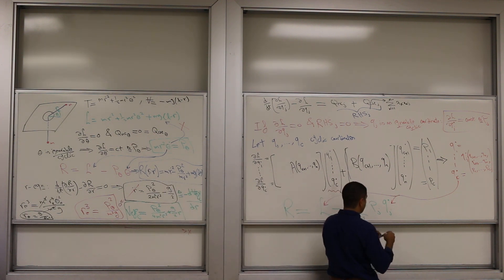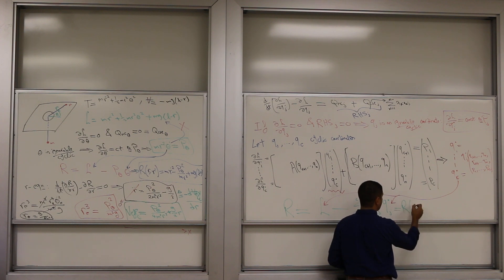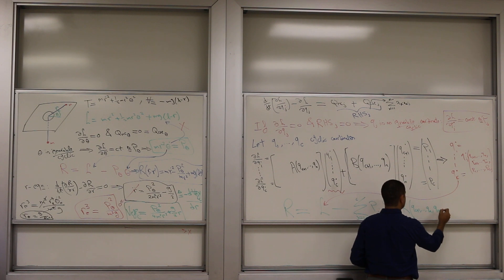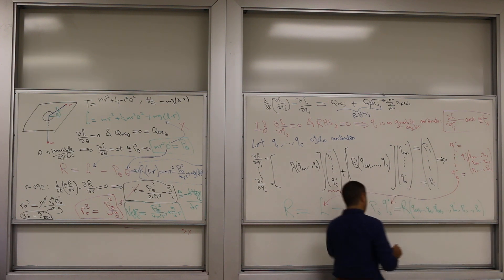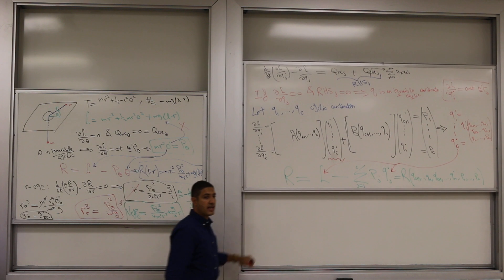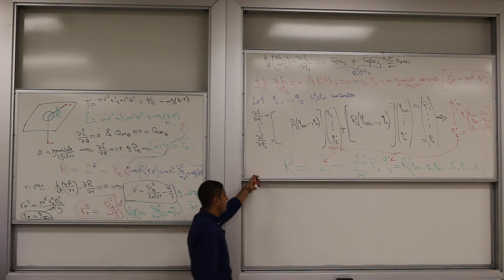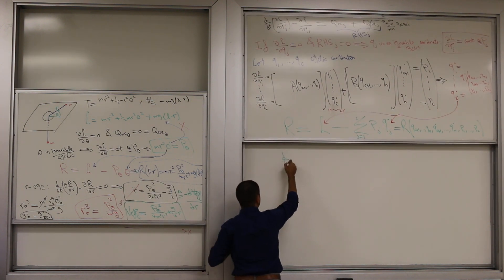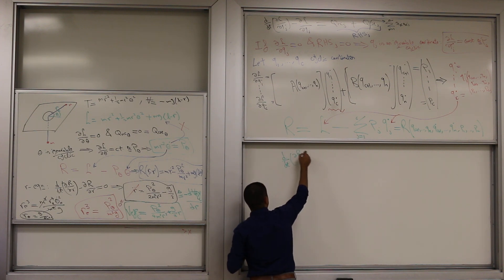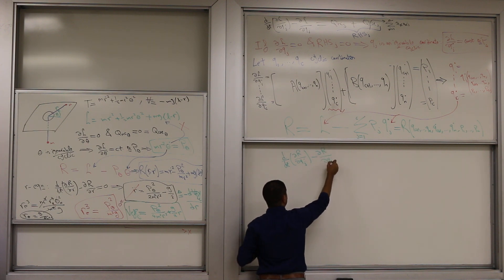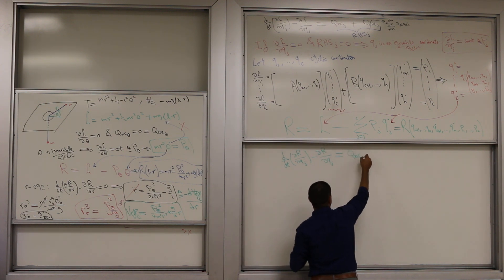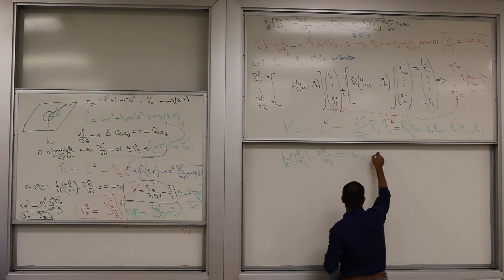The remaining Routhian is functional: the other q's, the other q dots, and the p's, and the p's, which are constant. And deal with this exactly as if it's Lagrangian. So you can write d by dt partial R partial qj dot minus partial R partial qj equals whatever you have, non-conservative and constraint.